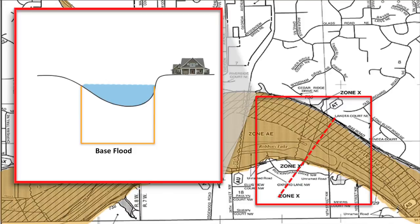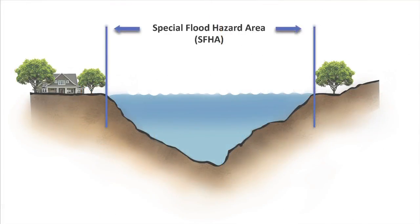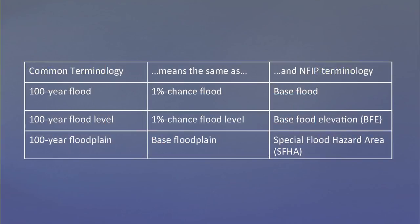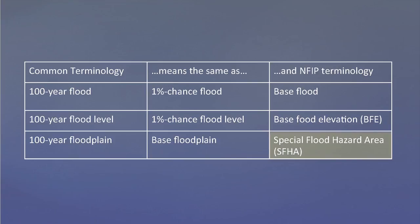FEMA refers to the area inundated by the base flood as the Special Flood Hazard Area, or SFHA. The NFIP defines the Base Flood Elevation, or BFE, as the elevation that floodwaters would reach at a particular location during the base flood. The methods for determining the base flood, the Special Flood Hazard Area, and the flood mapping process in general will be discussed in greater detail in Video 9 in this series. The table on screen shows the relationship between the different terms used by the NFIP to describe the same concepts. From this point forward, the term Base Flood will be used to reference the concept of the 100-year and 1% chance flood, and the term Special Flood Hazard Area, or SFHA, will be used to reference the 100-year floodplain.